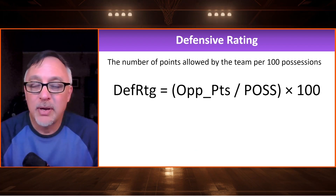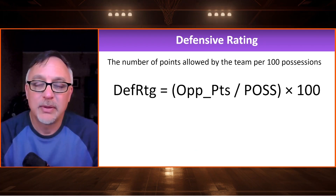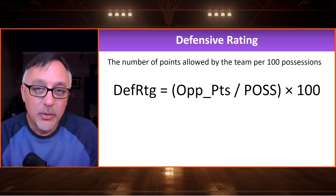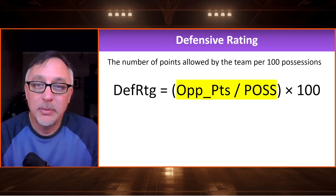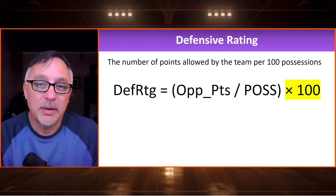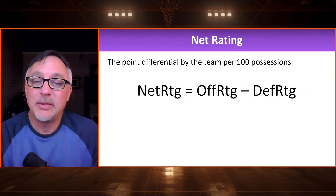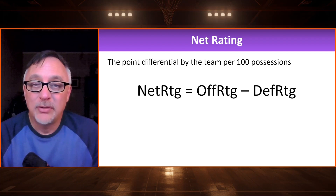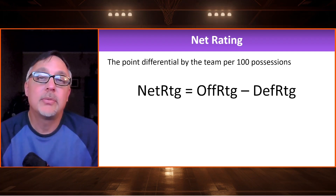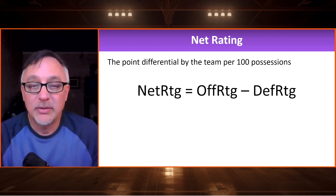If we're going to talk about offense, of course we're going to talk about defense. The defensive rating is very similar to the offensive rating — we look at the opponent points, take what they score divided by the number of possessions for the opponent, and multiply by 100. The net rating is simply the offensive rating minus the defensive rating. That's basically the point differential for a team — how many points they score per 100 possessions minus how many points they give up per 100 possessions.